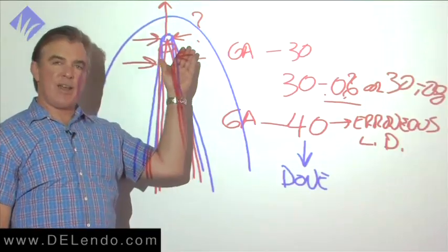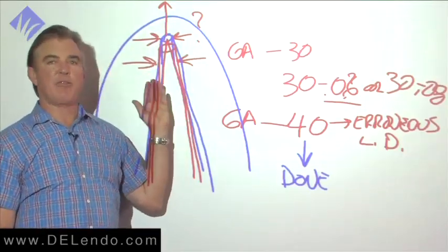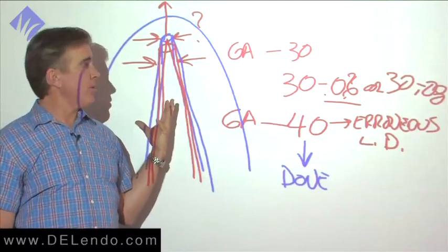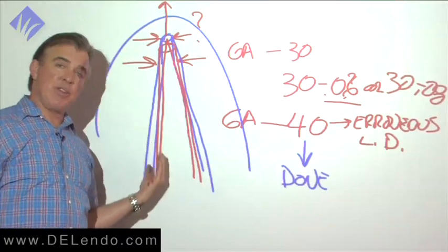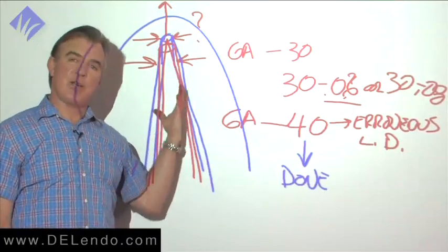If I have taper at the end of the root canal and I have a gutta-percha cone fitting a half millimeter from length, and all these measurements are accurate, you couldn't overfill if you tried. The only way that could happen is by accident.